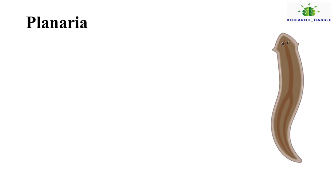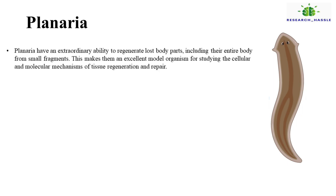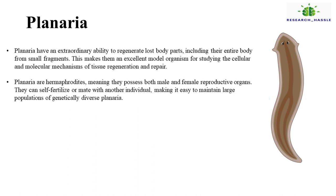Third, Planaria. Planaria have an extraordinary ability to regenerate lost body parts, including their entire body from small fragments. This makes them an excellent model organism for studying the cellular and molecular mechanisms of tissue regeneration and repair. Planaria are hermaphrodites, meaning they possess both male and female reproductive organs. They can self-fertilize or mate with another individual, making it easy to maintain large populations of genetically diverse Planaria.